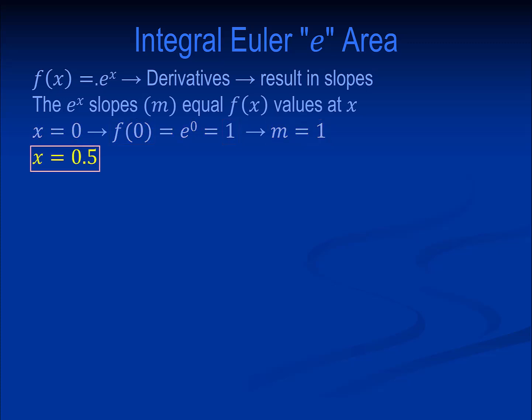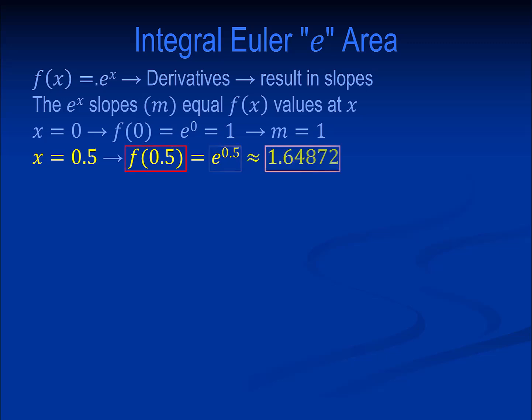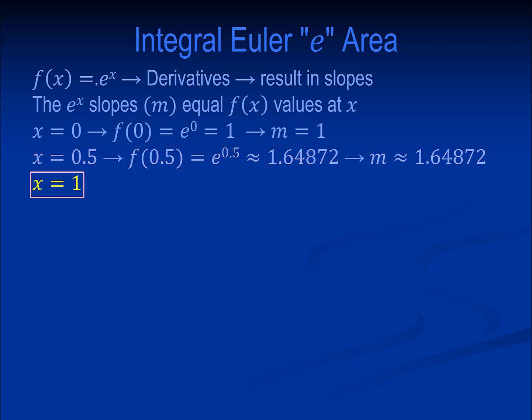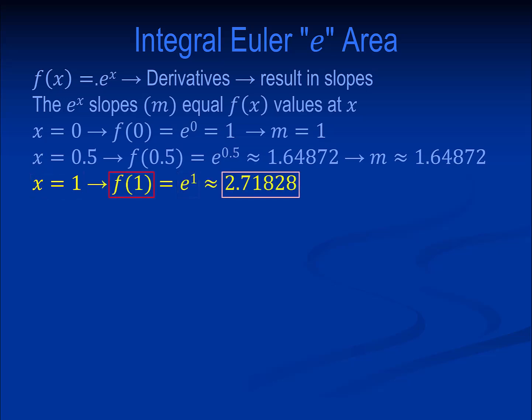When x equals 0.5, f of 0.5 equals e to the 0.5, which equals approximately 1.64872. The slope also equals f of 0.5. When x equals 1, f of 1 equals e to the 1, which equals approximately 2.71828. The slope also equals f of 1.